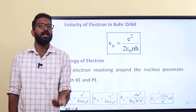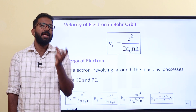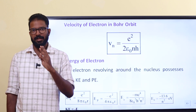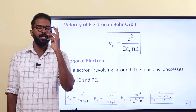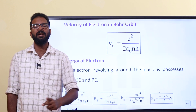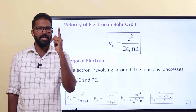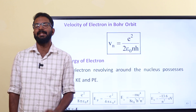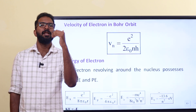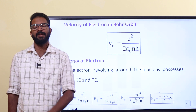Now we can see the excited states. N equal to 1 is the ground state. N equal to 2 is the 1st excited state. N equal to 3 is the 2nd excited state. N equal to 4 is the 3rd excited state.